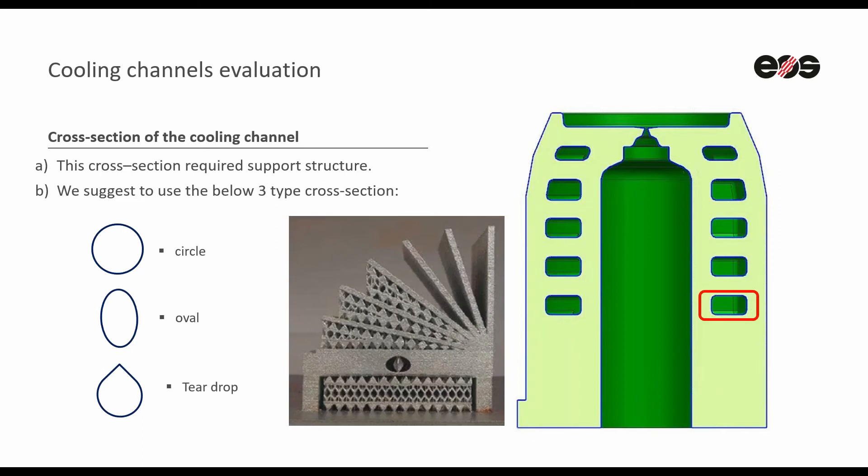Initially, the customer designed the cross-section to be a rectangle shape. Based on additive manufacturing design rules, such a structure requires support structures to build, and they are impossible to remove after building. This is why we suggested changing the rectangle cross-section to either circle, oval, or teardrop shape.